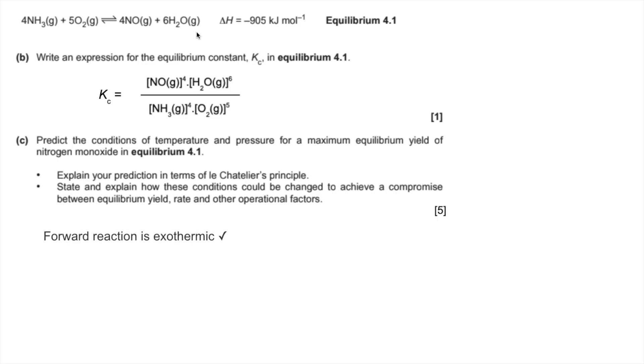The forward reaction is exothermic. There are more moles of gas on the product side, so we've got 10 moles of gas on the right versus 9 moles of gas on the left. With that in mind, a low temperature and a low pressure would favor the forwards reaction. Remember, low temperature always favors the exothermic direction, and low pressure favors the side with the most moles.